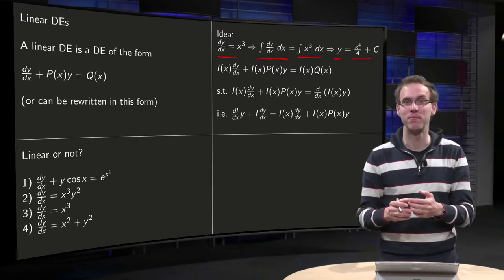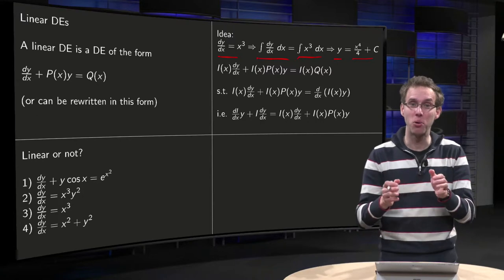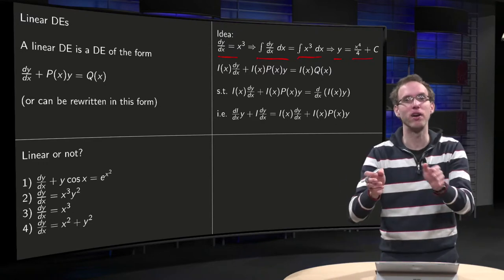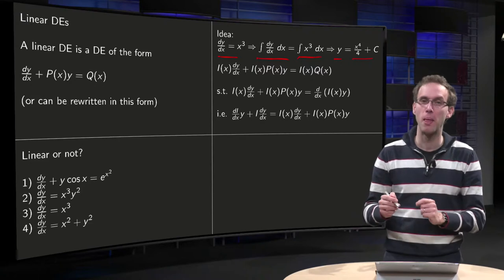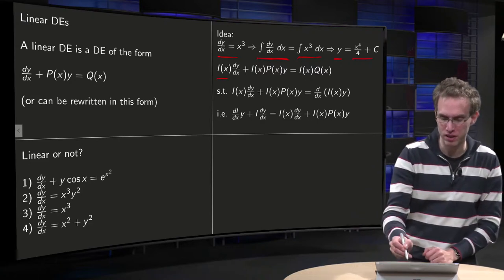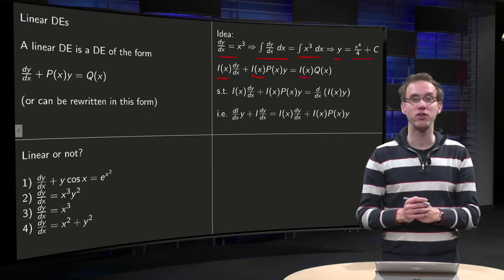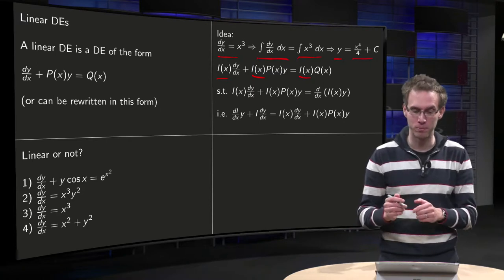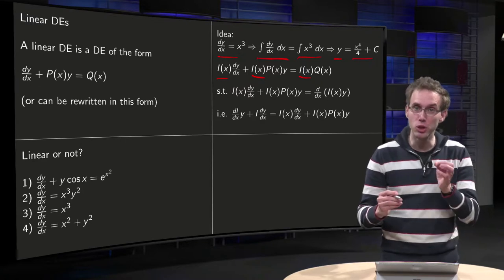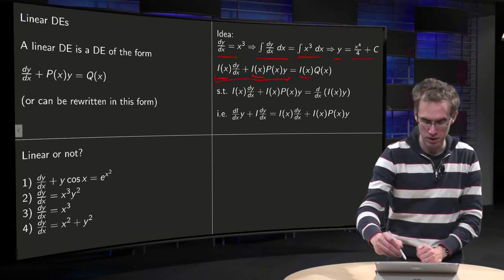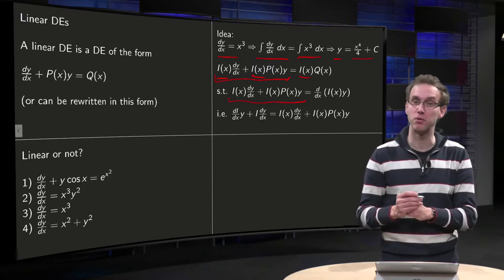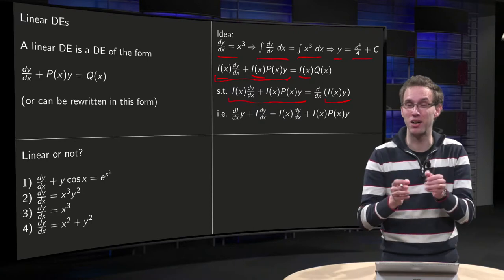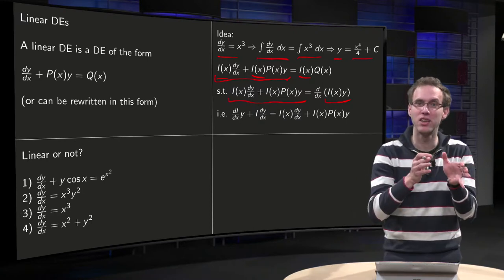But what if we have p? Then we have to apply a trick in order to get rid of the term p(x) times y, because we don't want that term. Without p(x) times y we can just integrate. So we multiply by the so-called integrating factor i(x). At first it looks much worse: we have i times y' plus i times p times y equals i times q. We want to choose i(x) such that this left-hand side equals the derivative of i times y.